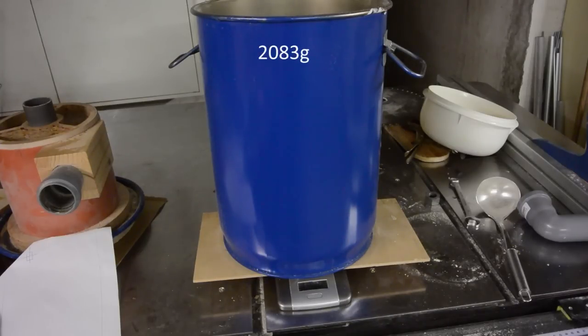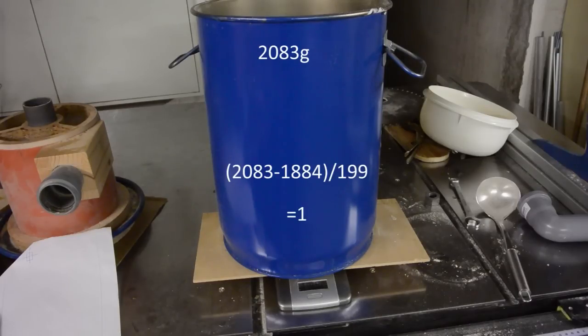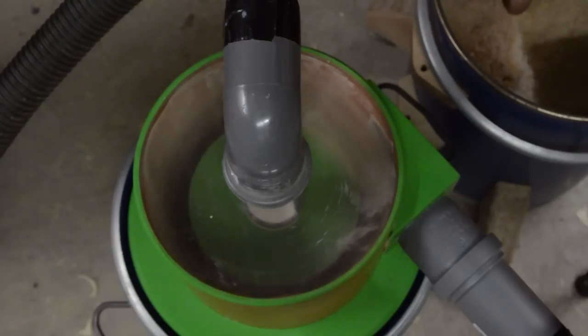After sucking it through, the bucket weighs 2083 grams, which would mean that the cyclone is 100% efficient, which it obviously isn't. But the dust that it missed is so little that the scale can't measure it. I really should have used more dust to make the test more accurate, but I didn't have more unfiltered dust around. So at least this proves that the concept works really well, and it has at least 99.5% efficiency.